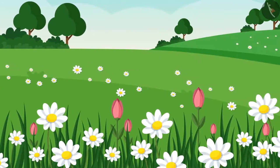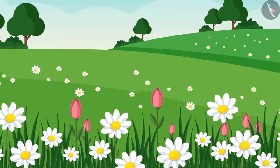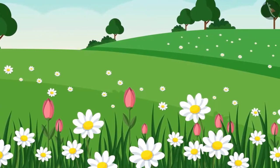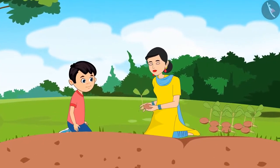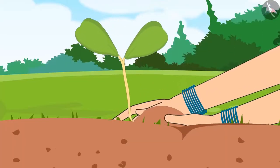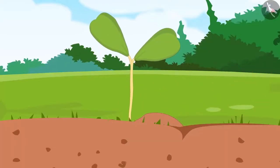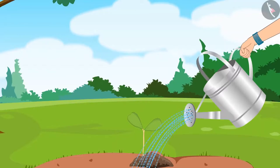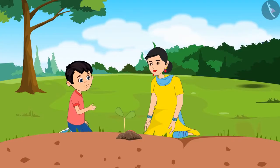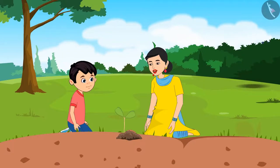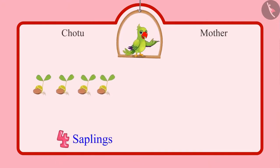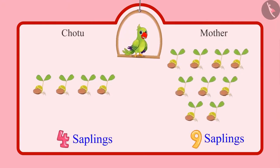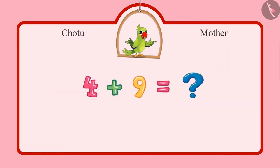So children, do you know how important it is to plant trees? Today Chotu is planting saplings in the garden with his mother. Look at this Chotu, this is the way to plant saplings. After this, we have to water them. Mom, even I want to plant saplings. Chotu, now you also start planting the saplings carefully. Chotu planted 4 saplings and mother planted 9 saplings. Can you tell me how many saplings in all did they both plant?